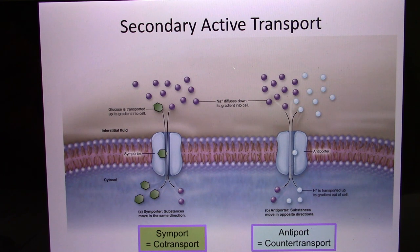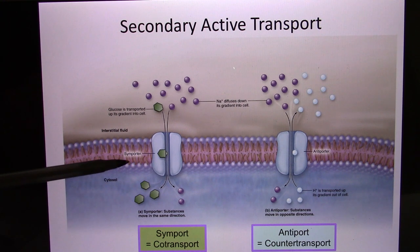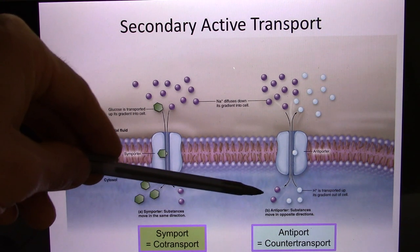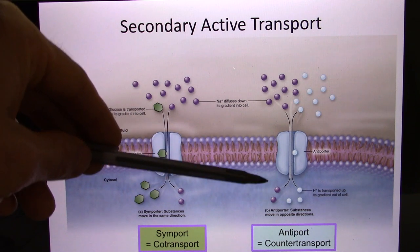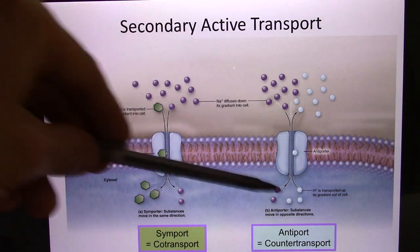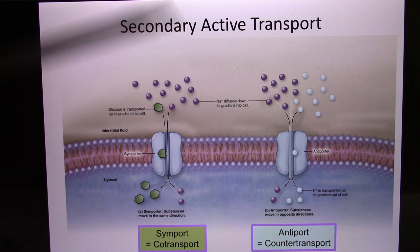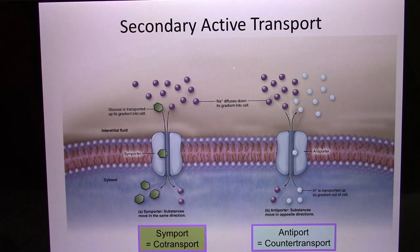Secondary active transport can be a symporter, like the sodium-glucose symporter, where both molecules move in the same direction. Or it can be an antiporter, like the hydrogen-sodium antiporter, where they move in the opposite direction. But the same concept applies: use the concentration gradient of the first molecule to move the second molecule against the concentration gradient.